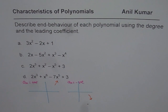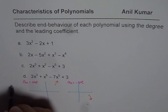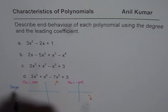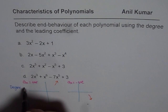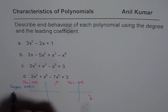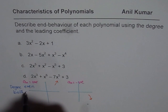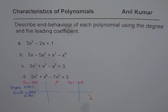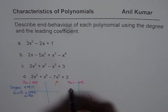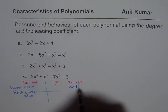The other important thing is how degree plays into end behavior. If the degree is even, then both ends are on the same side. And if the degree is odd, then the ends are opposite — opposite ends.